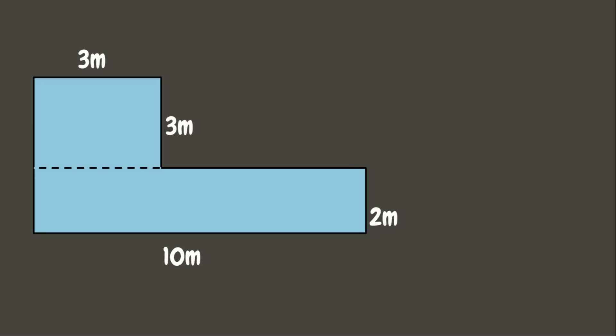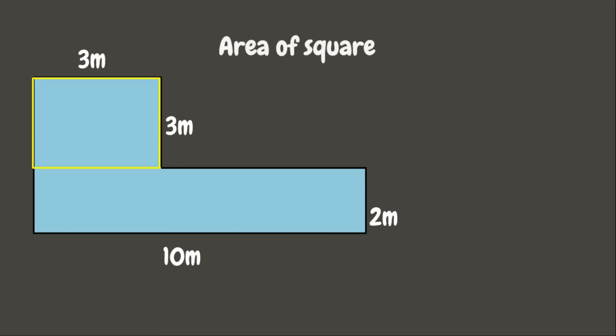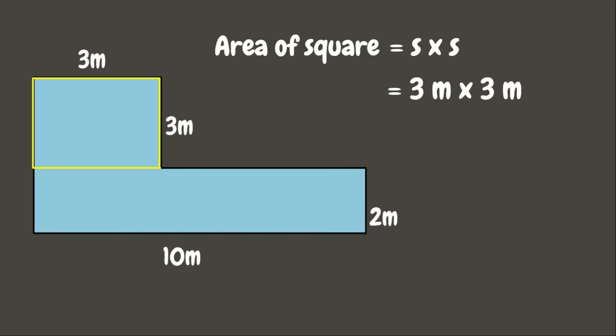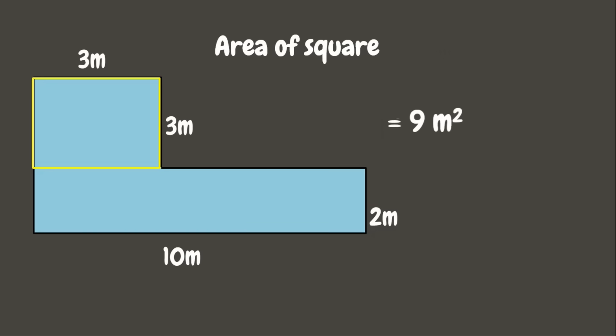Now that we have separated them, let's get the area of the square first. The formula for the area of the square is side times side. Here the measure of each side is 3 meters. So 3 meters times 3 meters equals 9 square meters — that is the area of the square.